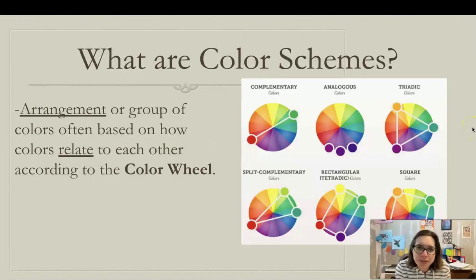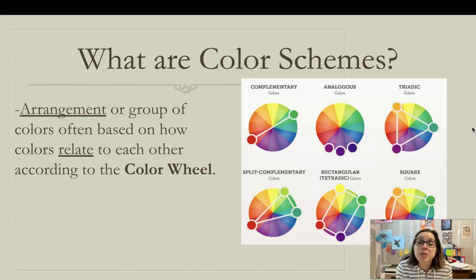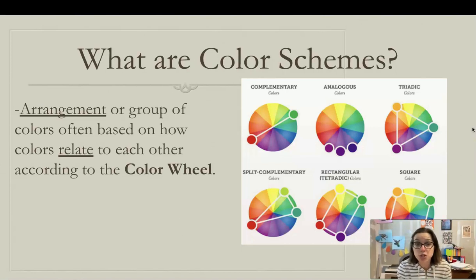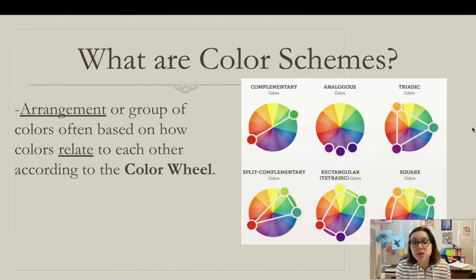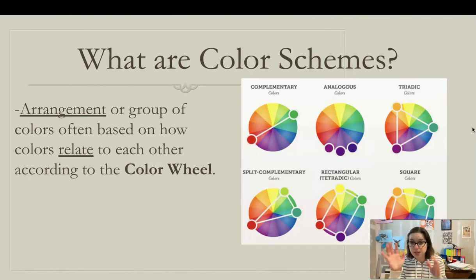What are color schemes? A color scheme is an arrangement or group of colors, often based on how the colors relate to each other according to the color wheel. Color schemes describe different color arrangements based on where colors are located on the color wheel, and you can see some examples here.